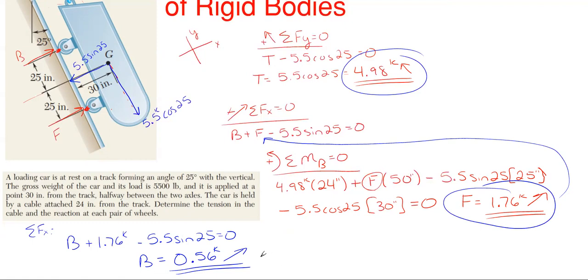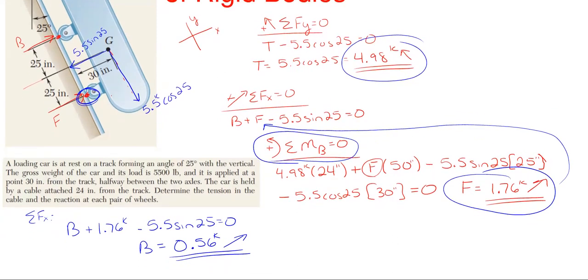Well with equilibrium problems and with reaction problems there is definitely a way to check your answers to make sure that you didn't screw up something somewhere. What you can do is that you can utilize moment again but summing moments about the other reaction point. So for this one we summed about point b. Well sum about point f here and see if everything cancels out to zero or very close to zero. It may not be exactly zero due to rounding.